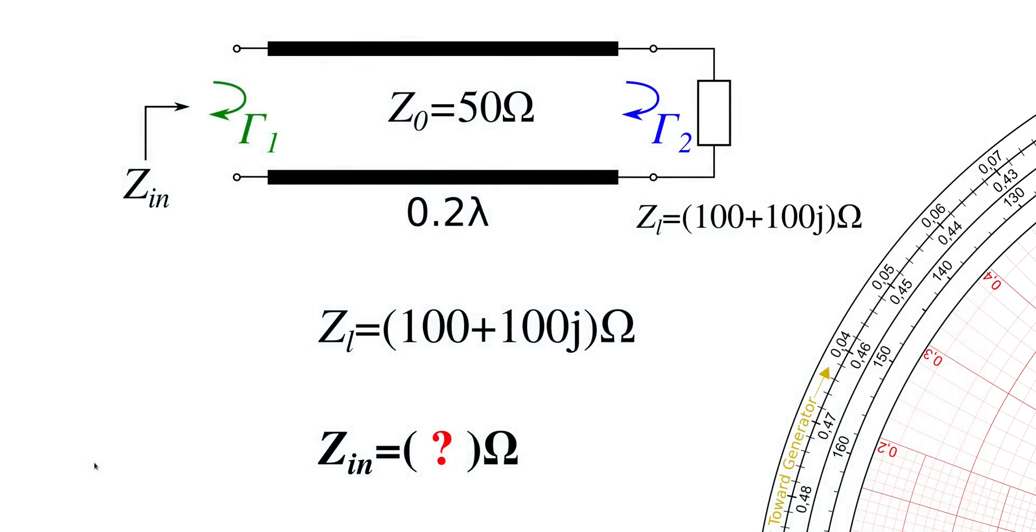In this example I will show you how to find the input impedance of a terminated line. Let's consider this example here.